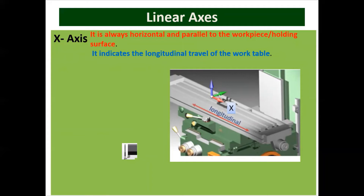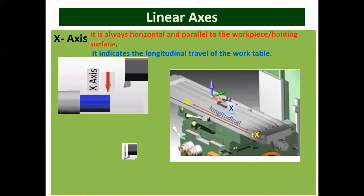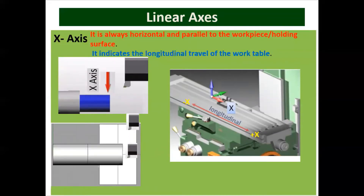When looking from the tool spindle towards the column, the positive X direction is to the right in the vertical milling machine. If the operator is standing there, the right side is always considered positive X and the left side is negative X. For the lathe machine, when the tool is moving away from the operator, we consider that as positive X axis, and when the tool is moving towards the operator, we consider that as negative X axis.